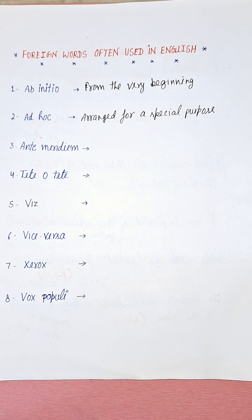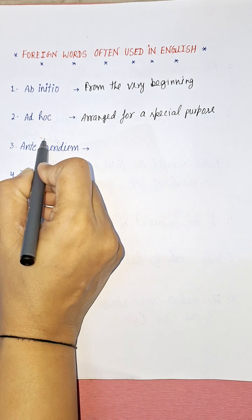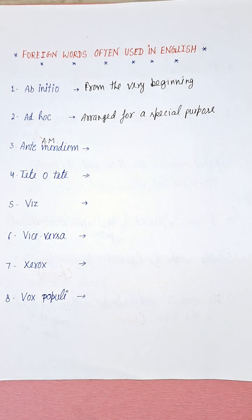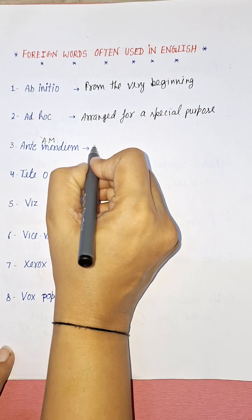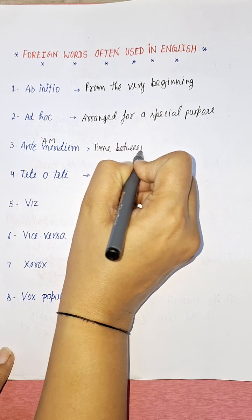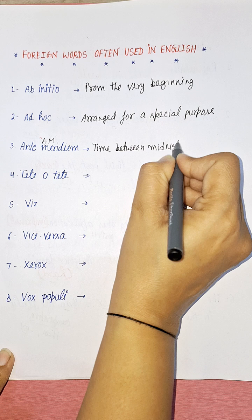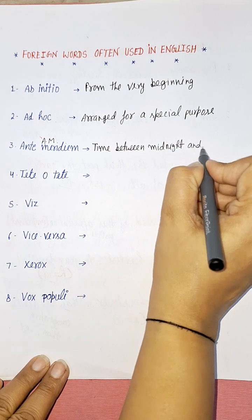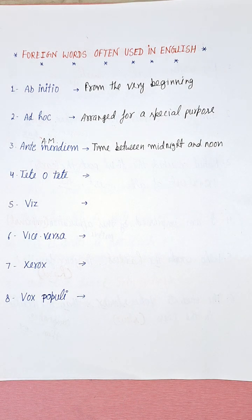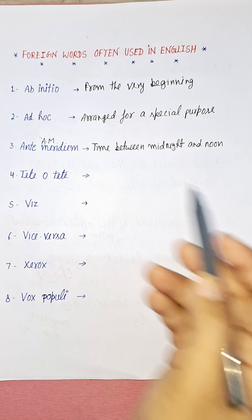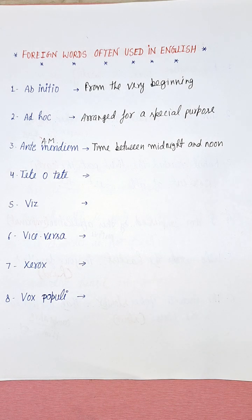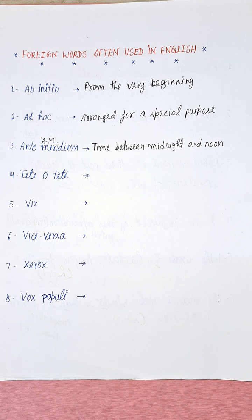Now let's take the third one: ante meridiem — everyone knows this as AM. It means the time between midnight and noon. Midnight is 12 o'clock at night, and noon is 12 o'clock in the day. For example: 'The ante meridiem brunch was held before noon so that more people could attend.'